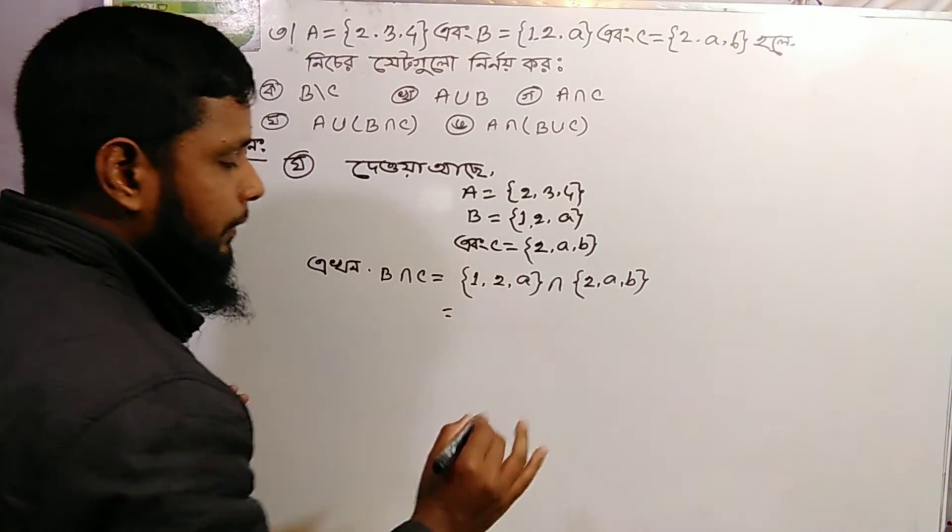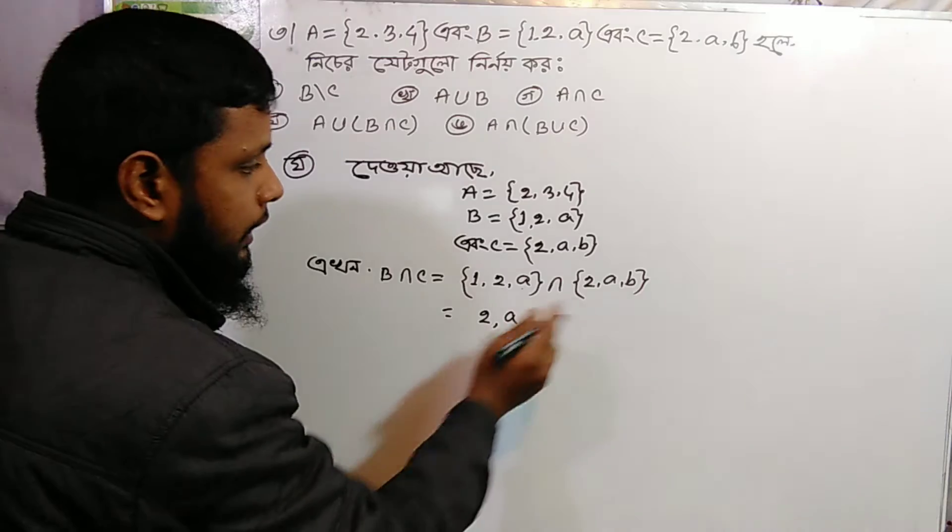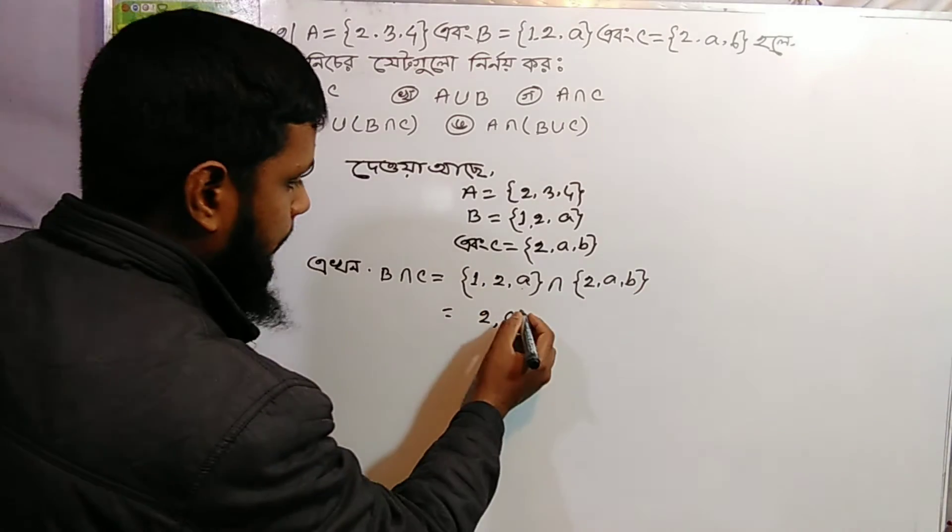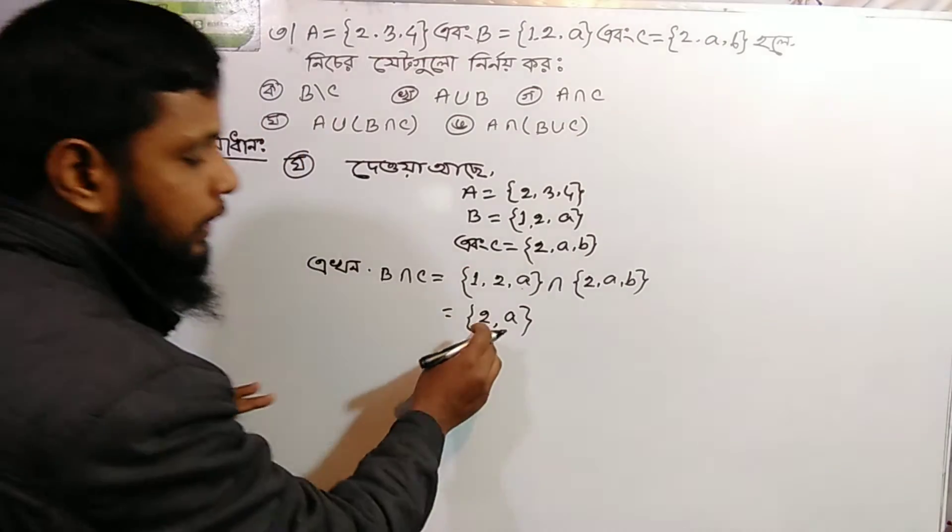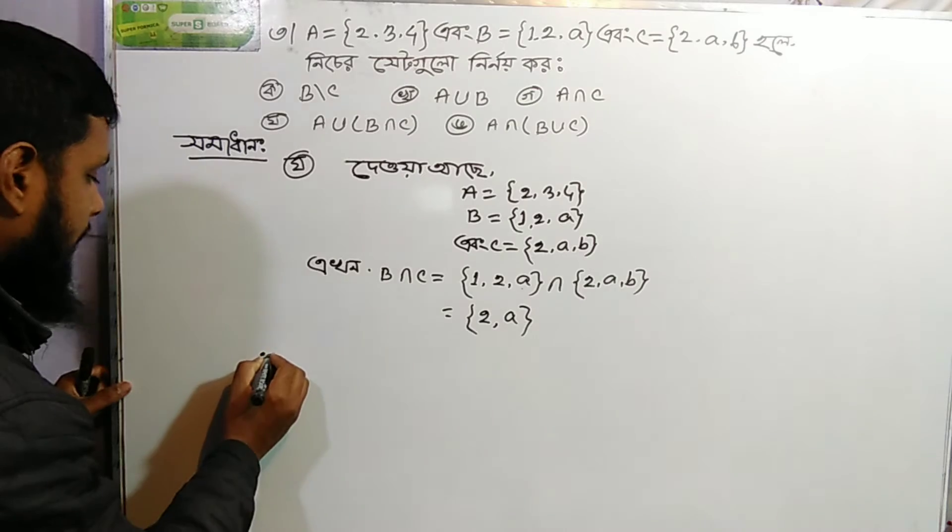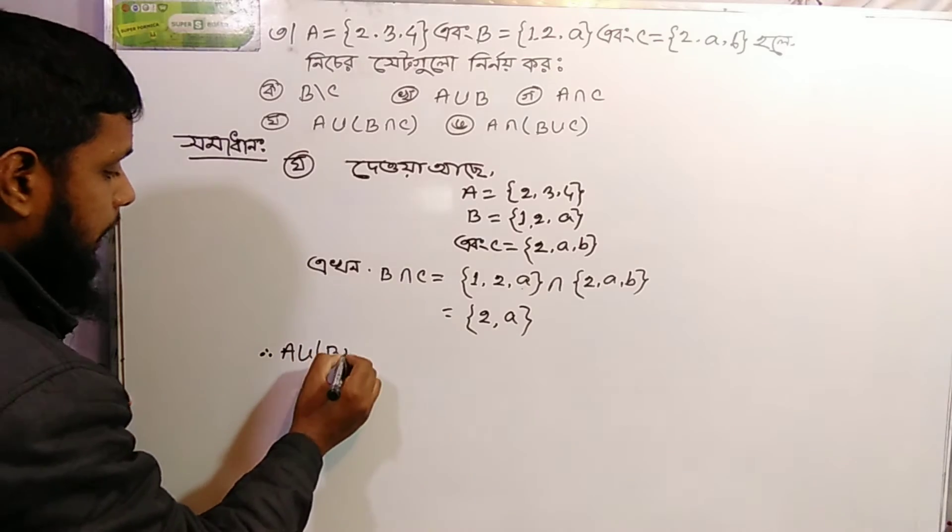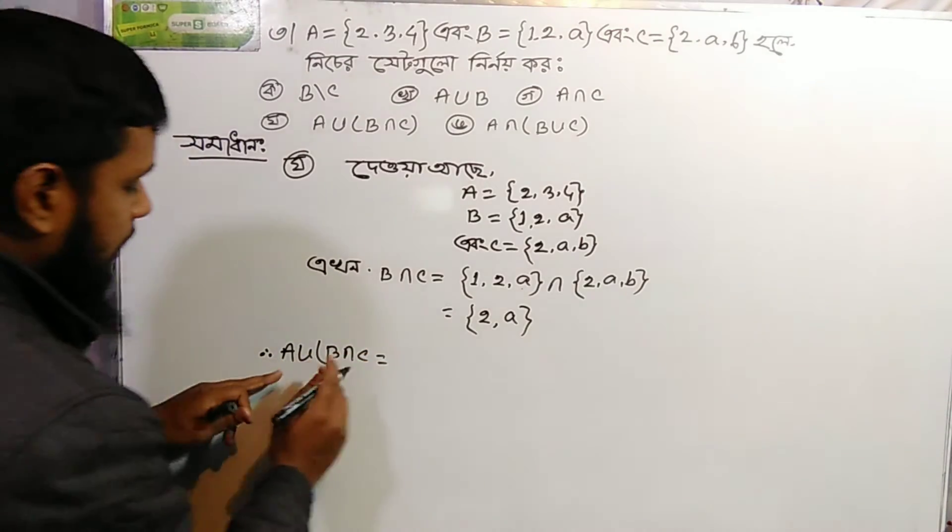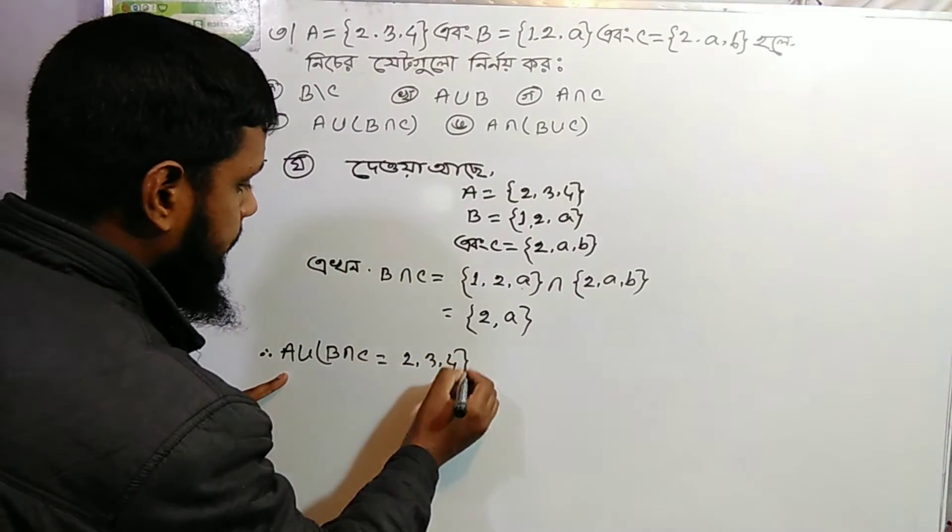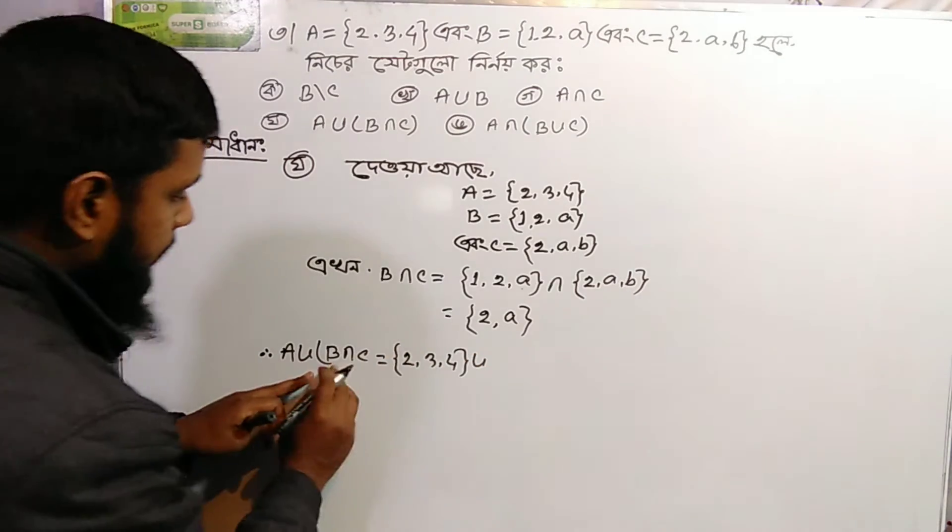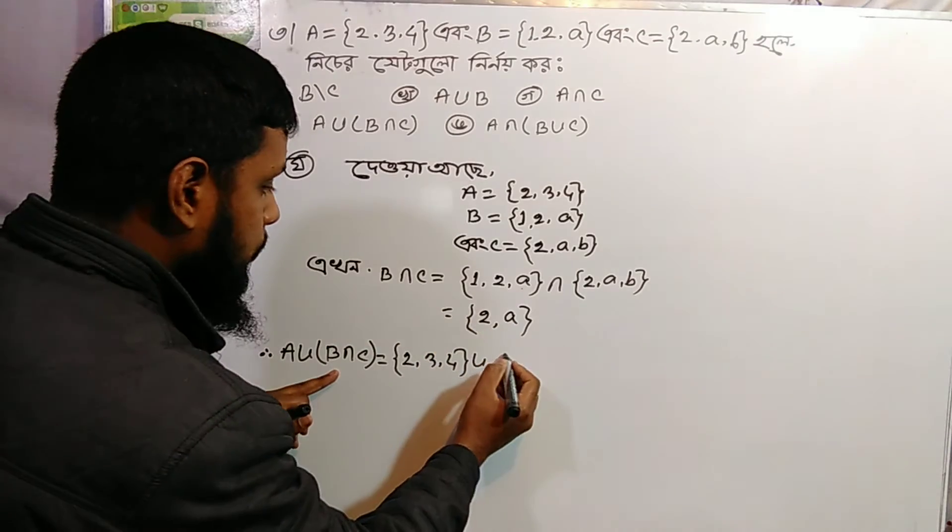B intersection C: B is {1, 2, a} and C is {2, a, b}. The common elements are {2, a}.